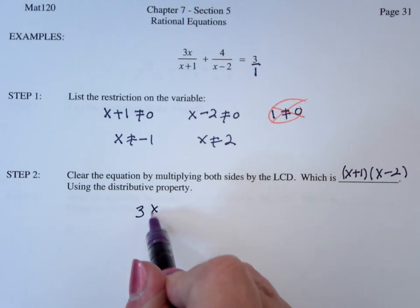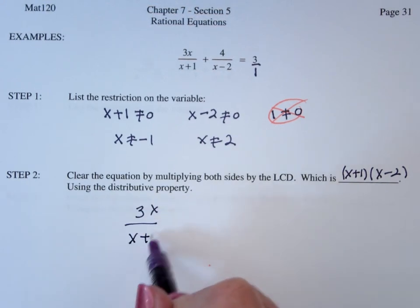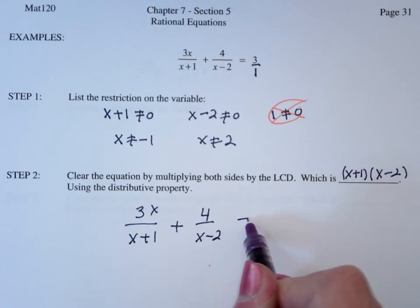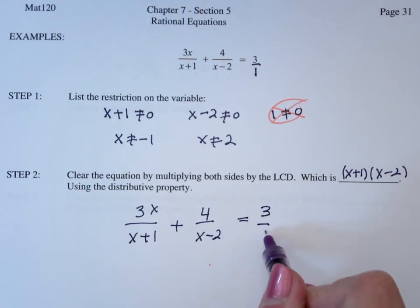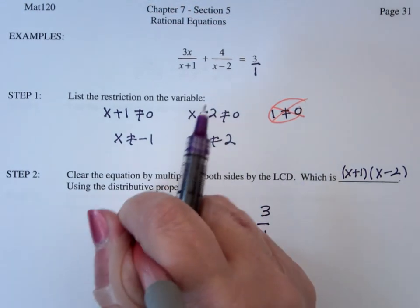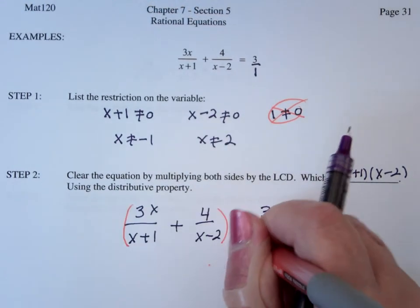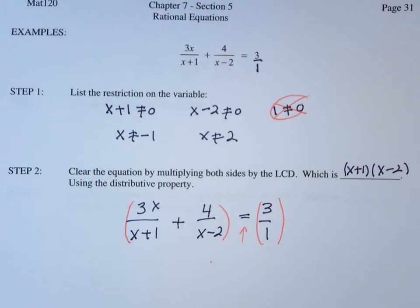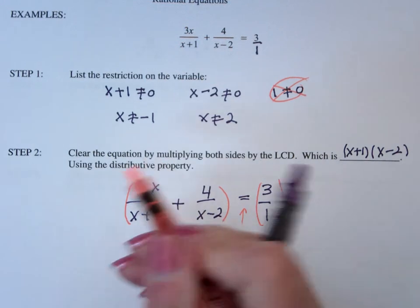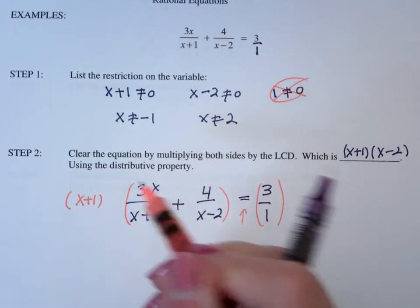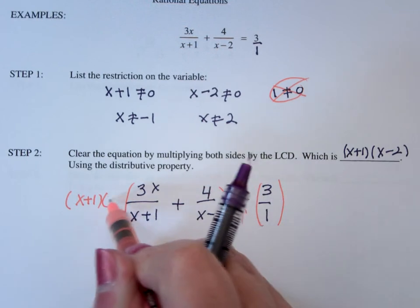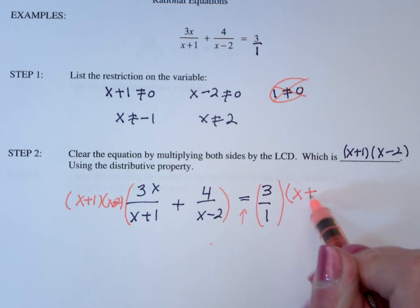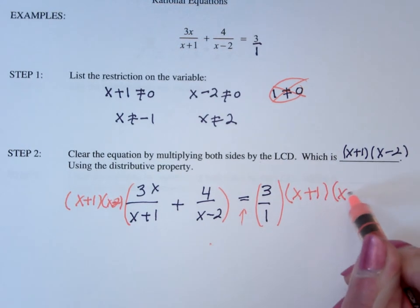So if I take the problem 3x over x plus 1 plus 4 over x minus 2 equals, and it's really 3 over 1, I have a left-hand side, because that's my equal sign, and a right-hand side. You're going to multiply the left by x plus 1 times x minus 2, and the right by x plus 1 times x minus 2.